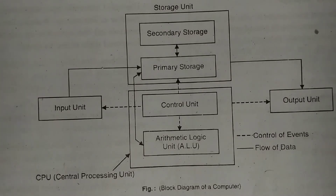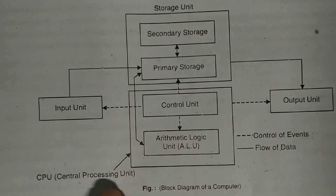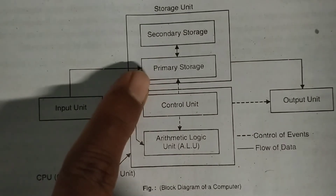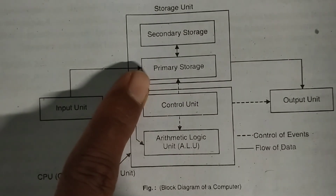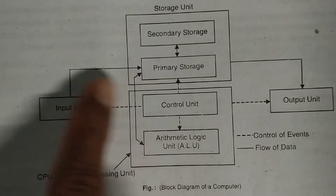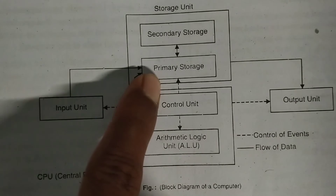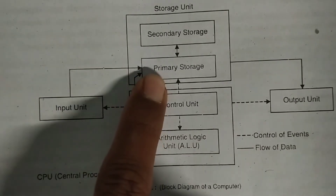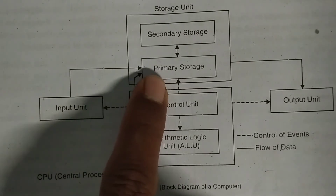The system assigns a unique location to each data element. Examples of primary storage include RAM (Random Access Memory), ROM (Read Only Memory), cache memory, and virtual memory. Primary storage is direct access and temporary in nature — whenever the power goes off, data stored in primary storage will be erased or deleted.